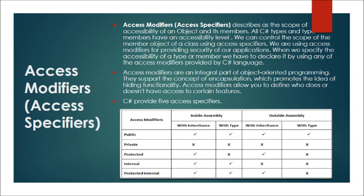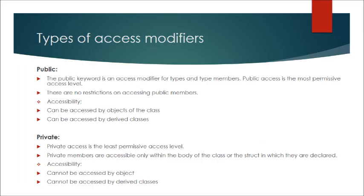C-sharp provides five access specifiers. The first type is Public. The public keyword is an access modifier for types and type members. Public access is the most permissive access level — there are no restrictions on accessing public members. In terms of accessibility, public members can be accessed by objects of the class and can be accessed by derived classes.